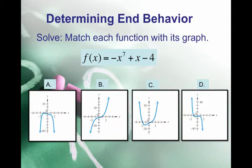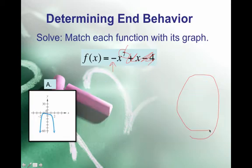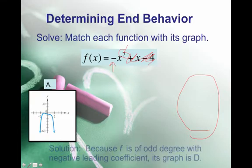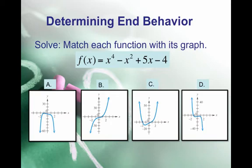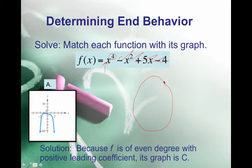Negative x to the 7th plus x minus 4: the degree 7 is odd and the leading coefficient is negative, so the left goes up and the right goes down — that's graph D. The last function, with a positive leading coefficient and even degree 4, has both ends pointing up — that's graph C.